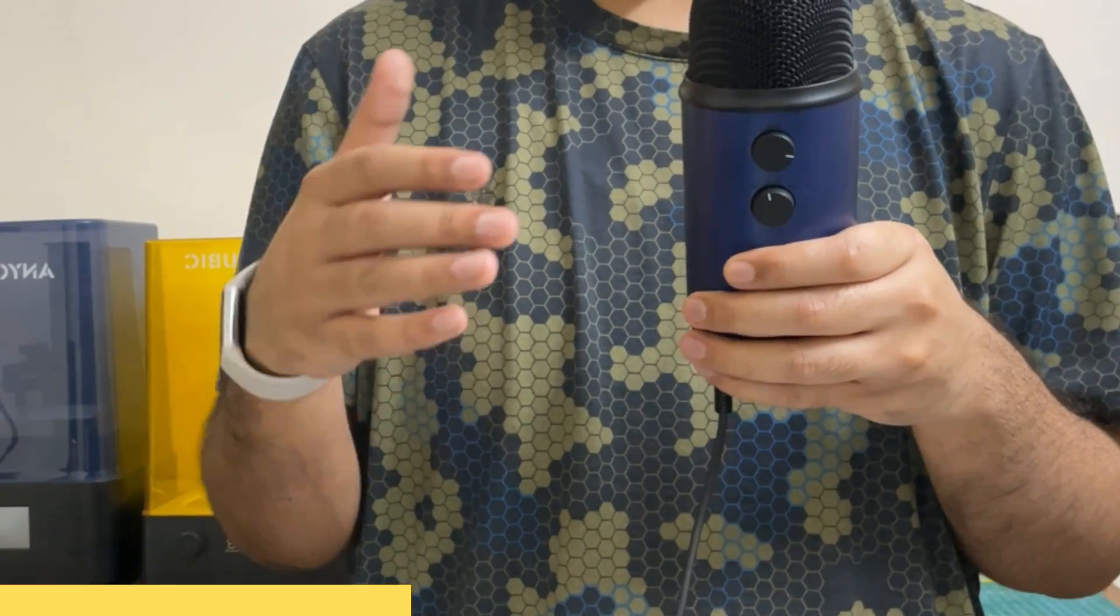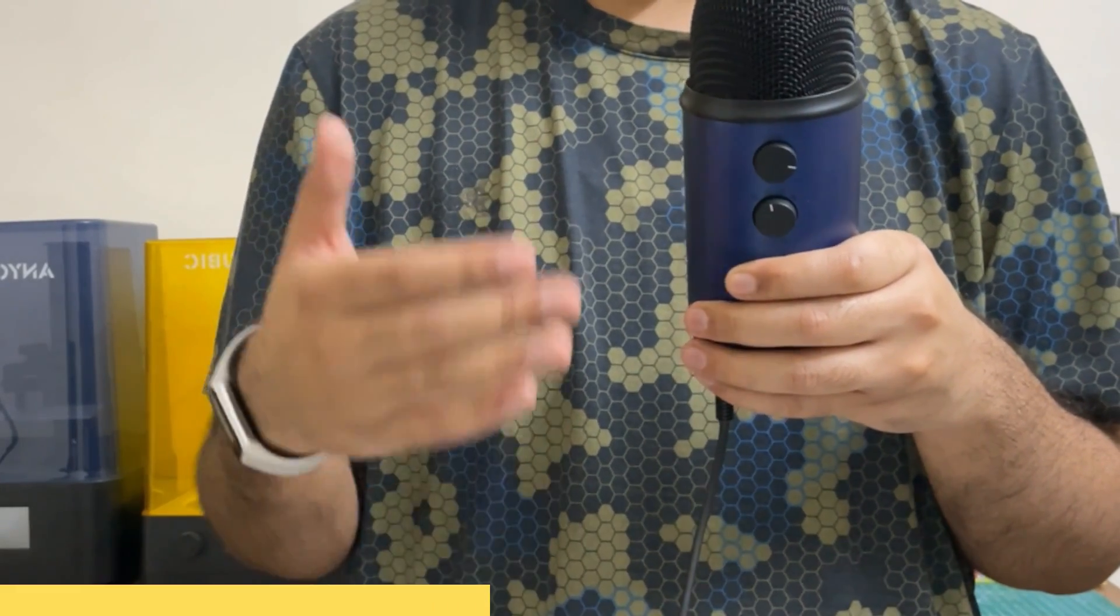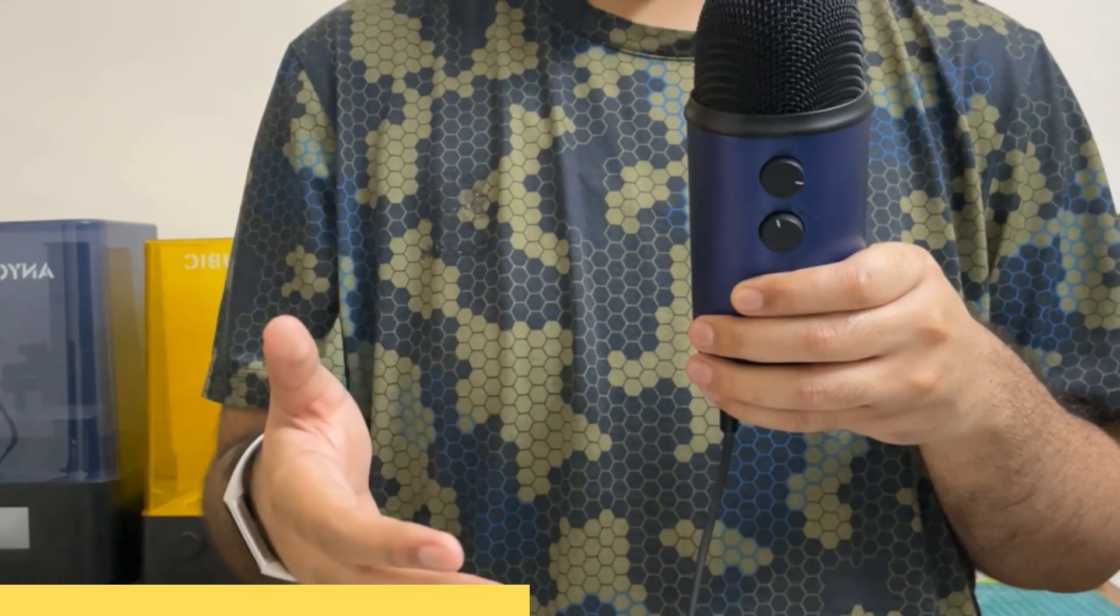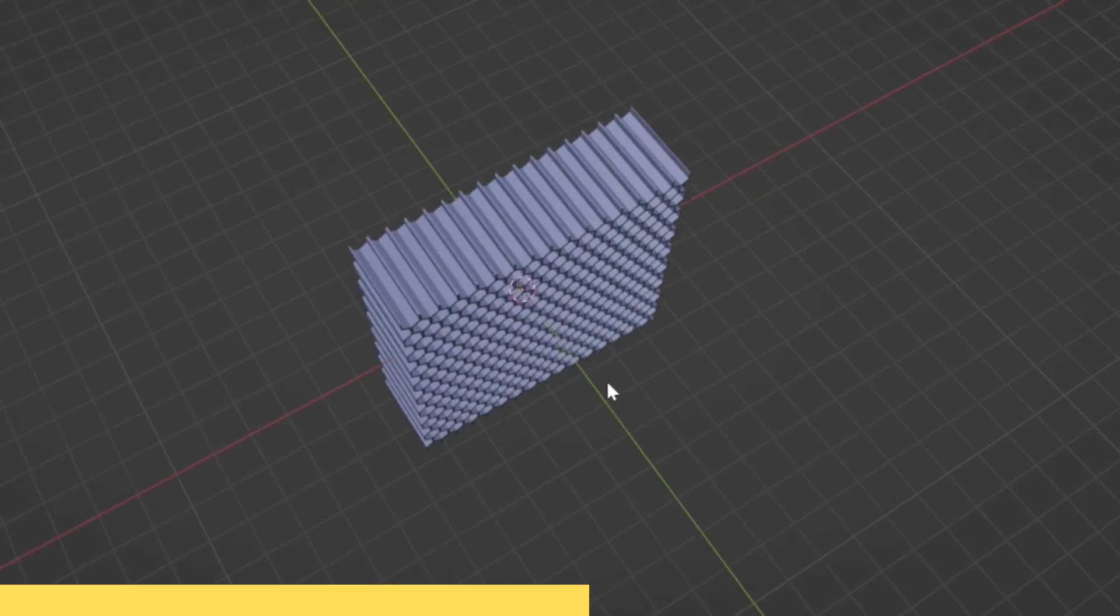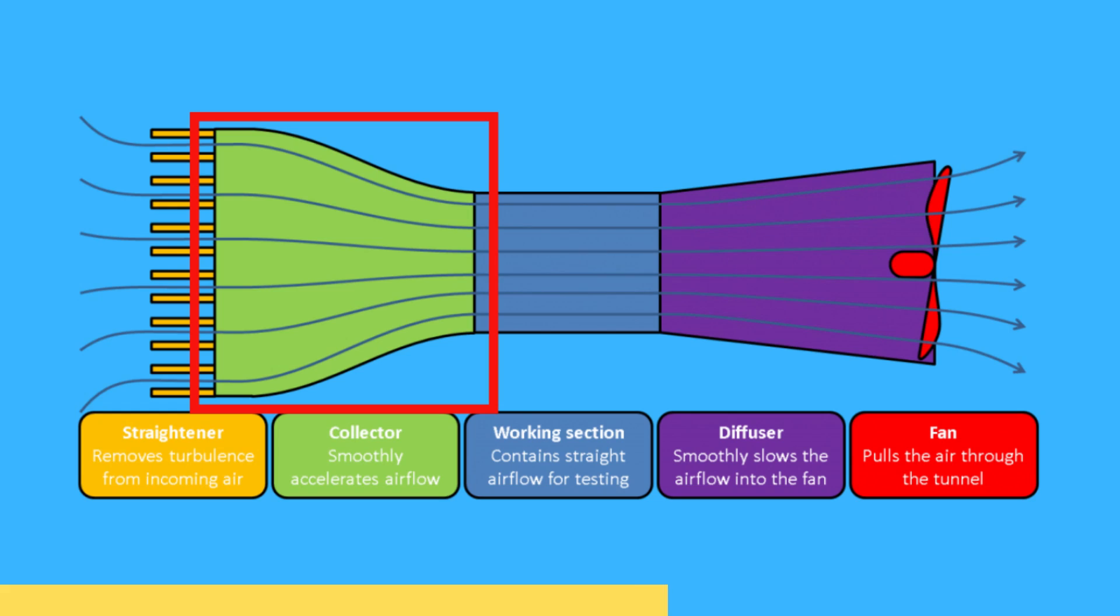Then comes the flow straightener. It's 2024 and while it might be okay for your neighbor to be into making love to frying pans, I unfortunately need my air to be straight for my wind tunnel. To do that and eliminate turbulence, we pass it through a flow straightener before letting it into the wind tunnel. The third part is the collector, which basically just compresses the air and makes it faster. You can read up about the continuity equation if you're interested in learning about how this actually works.